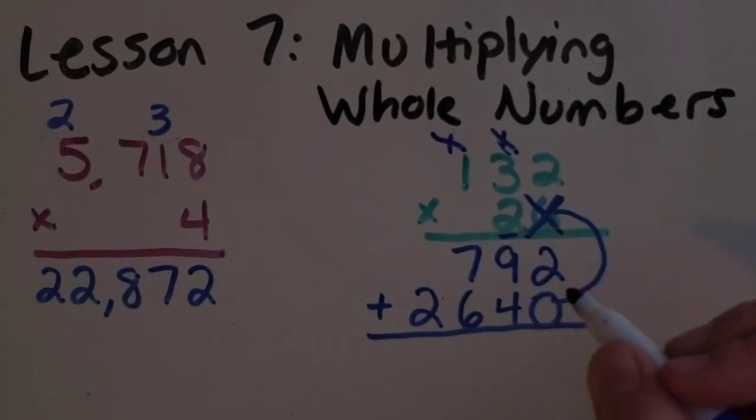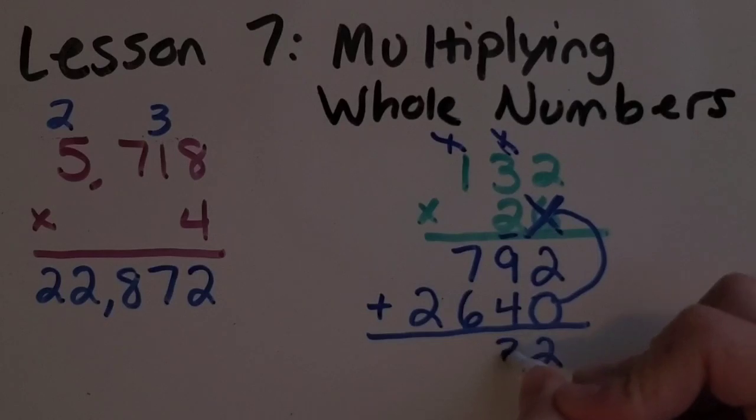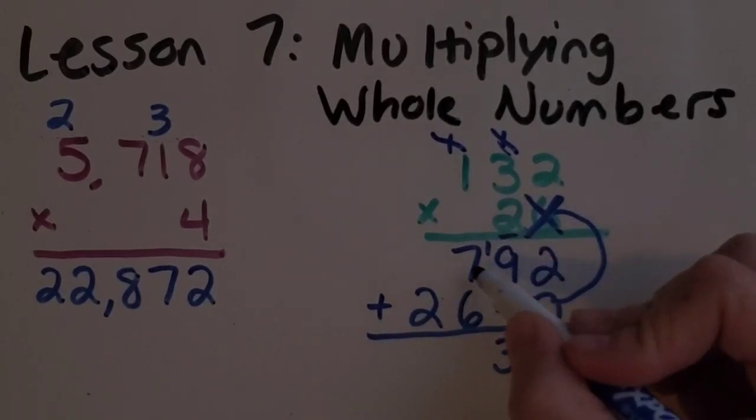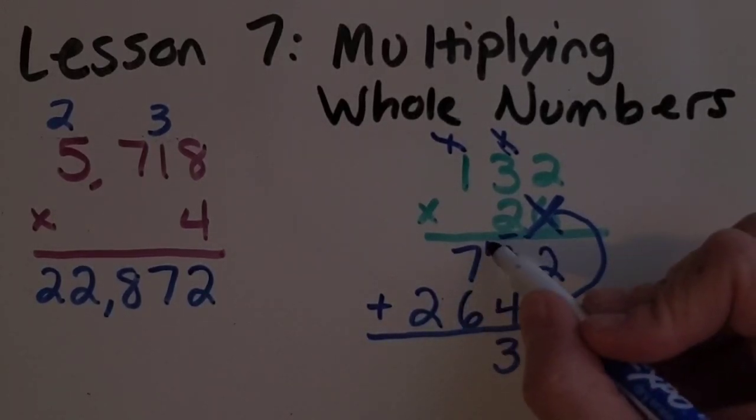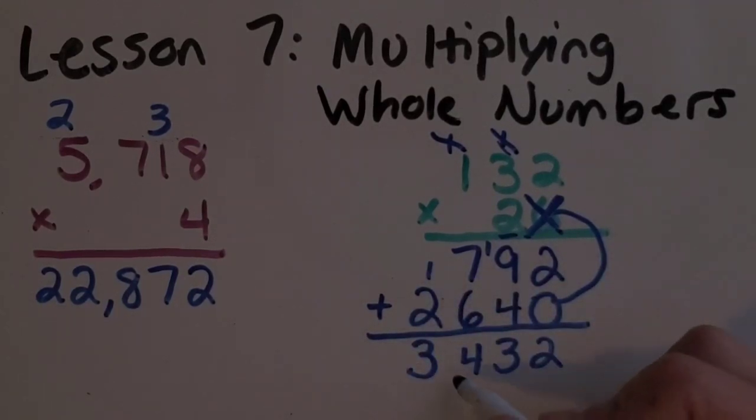So two plus zero is two. Nine plus four is 13. Seven plus six is 13, plus the one is 14. And then there's a three. So my total product is 3,432. Great job.